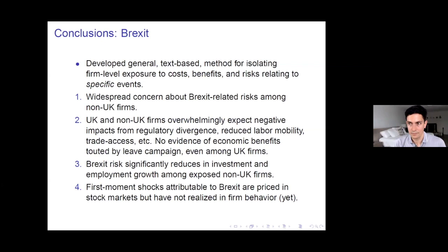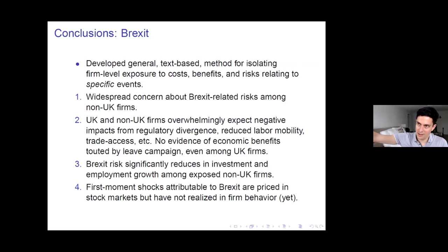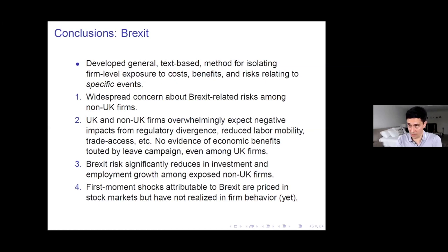One question is: how does the estimated coefficient compare when one uses alternative measures of exposure such as sales to the UK? The UK sales measure will have the same sign as our Brexit exposure measure, but Brexit exposure picks up more granular stuff — I can control for UK sales in the regressions and still get significant action on the Brexit exposure variable. Of course, with traditional exposure measures you can't split between sentiment and risk, and in the investment and employment regressions all the action is on risk — even when you add controls like the firm's stock return.